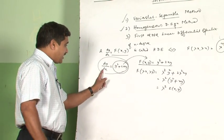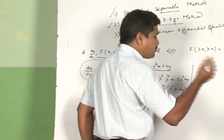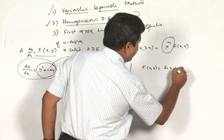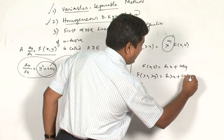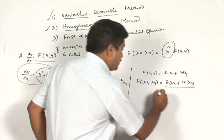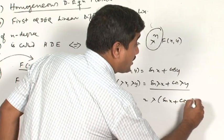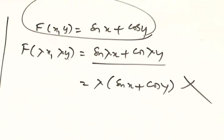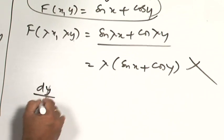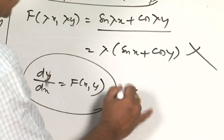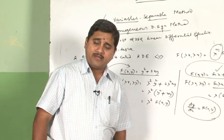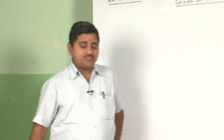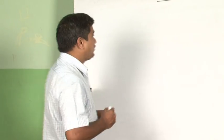As another example, if f(x, y) = sin(x) + cos(y), then f(λx, λy) = sin(λx) + cos(λy). You cannot factor out λ from this, so you cannot write it as λ · f(x, y). Therefore such functions are not homogeneous, and if dy/dx = f(x, y) uses such a function, it is not a homogeneous differential equation.